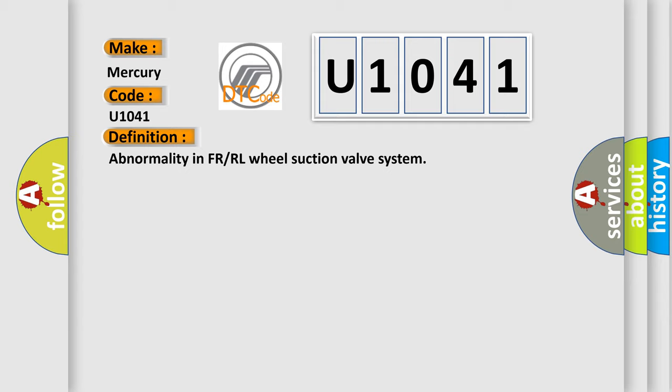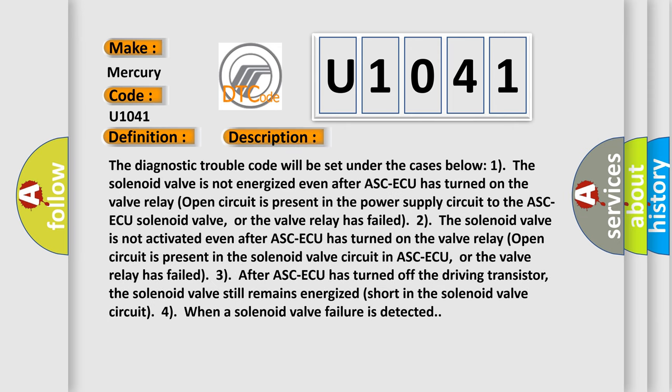Here is a short description of this DTC code. The diagnostic trouble code will be set under the following cases. One: the solenoid valve is not energized even after ASCAQ has turned on — a valve relay open circuit is present in the power supply circuit to the ASCAQ solenoid valve, or the valve relay has failed. Two: the solenoid valve is not activated even after ASCAQ has turned on — a valve relay open circuit is present in the solenoid valve circuit in ASCAQ, or the valve relay has failed.